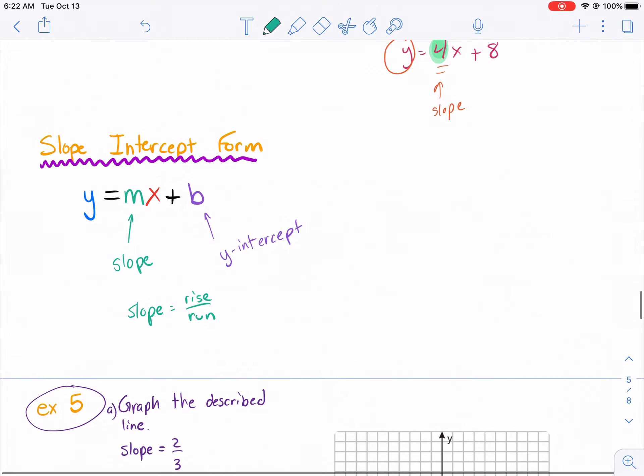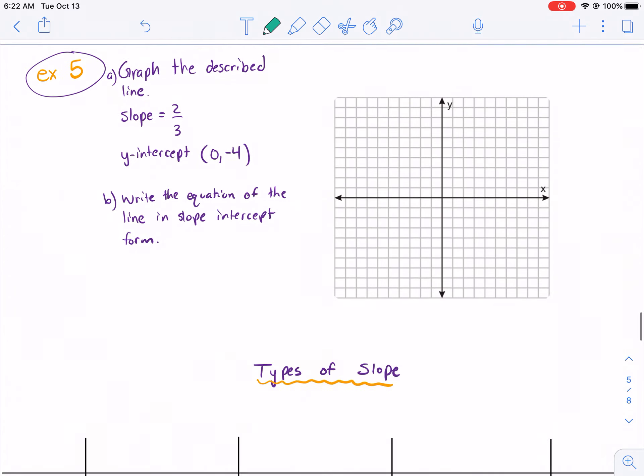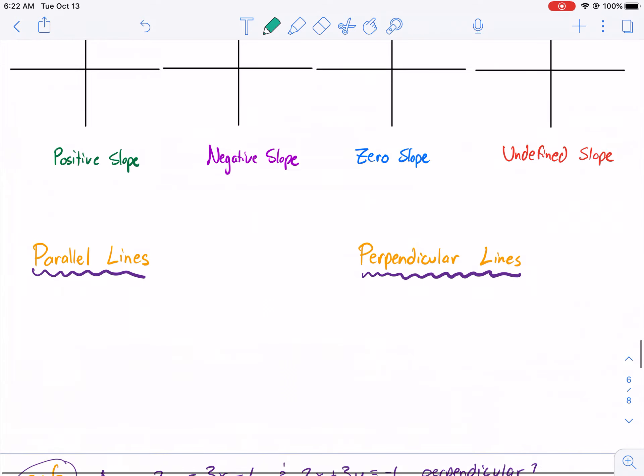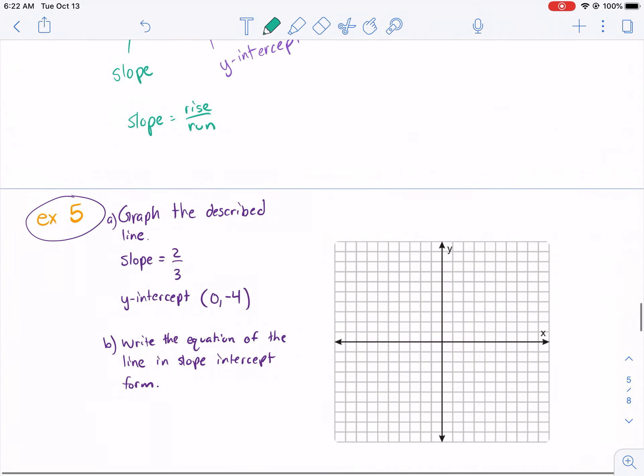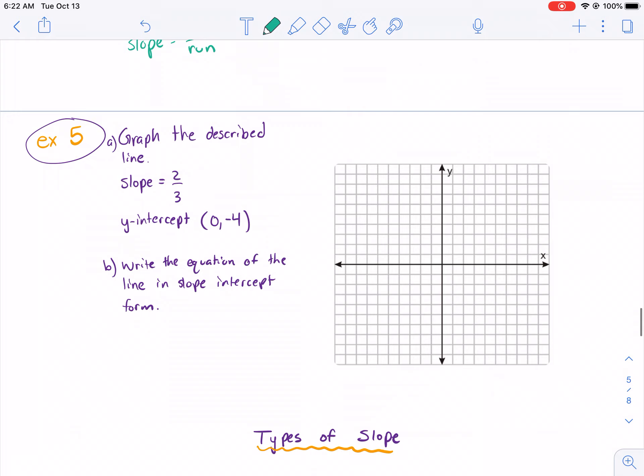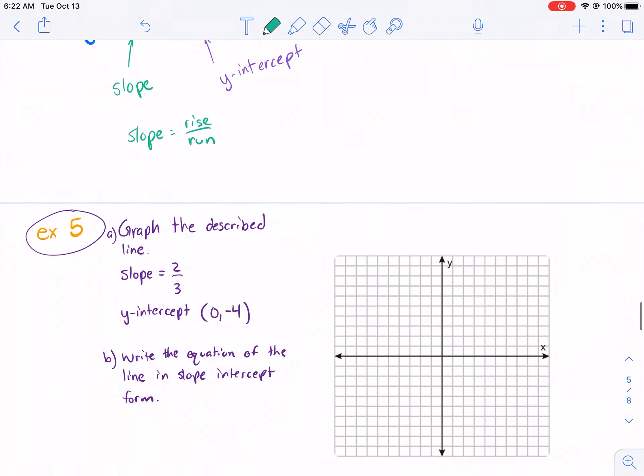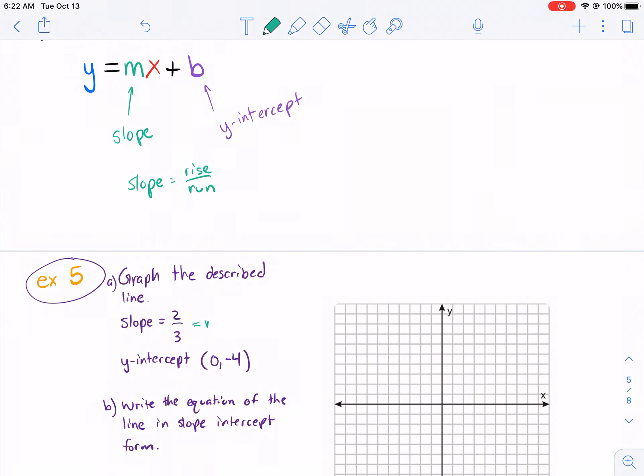I think I'm going to stop at types of slope. So, we're going to do an example with slope intercept form. And then we'll do types of slope in the next video. I just wanted to give you a heads up. So, graph the described line. We have slope equals 2/3. Y-intercept equals (0, -4). Write the equation of the line in slope intercept form. I mean, honestly, we could do B before we do A. We already know that this is our M and this is our B. If our Y-intercept is (0, -4), we're only interested in the Y value. In this case, it's negative 4. So, this is our Y-intercept.